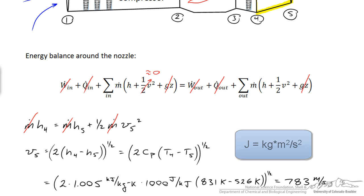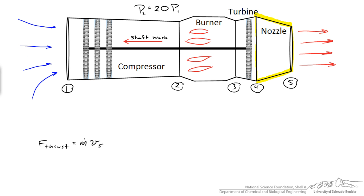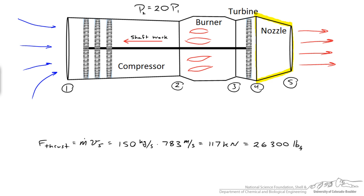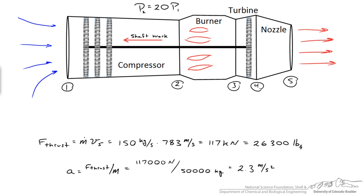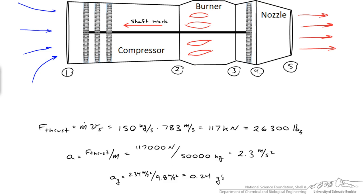A common student mistake is forgetting to convert Cp from kJ/(kg·K) to J/(kg·K). With V5 known, the thrust force equals the mass flow rate of air times V5: 150 kg/s × 780 m/s ≈ 117 kN, which is a little over 26,000 pounds — a typical value for a turbojet engine. Finally, acceleration equals 117,000 N divided by the airplane's mass of 50,000 kg, giving about 2.34 m/s², or approximately 0.24 g's in the forward direction.